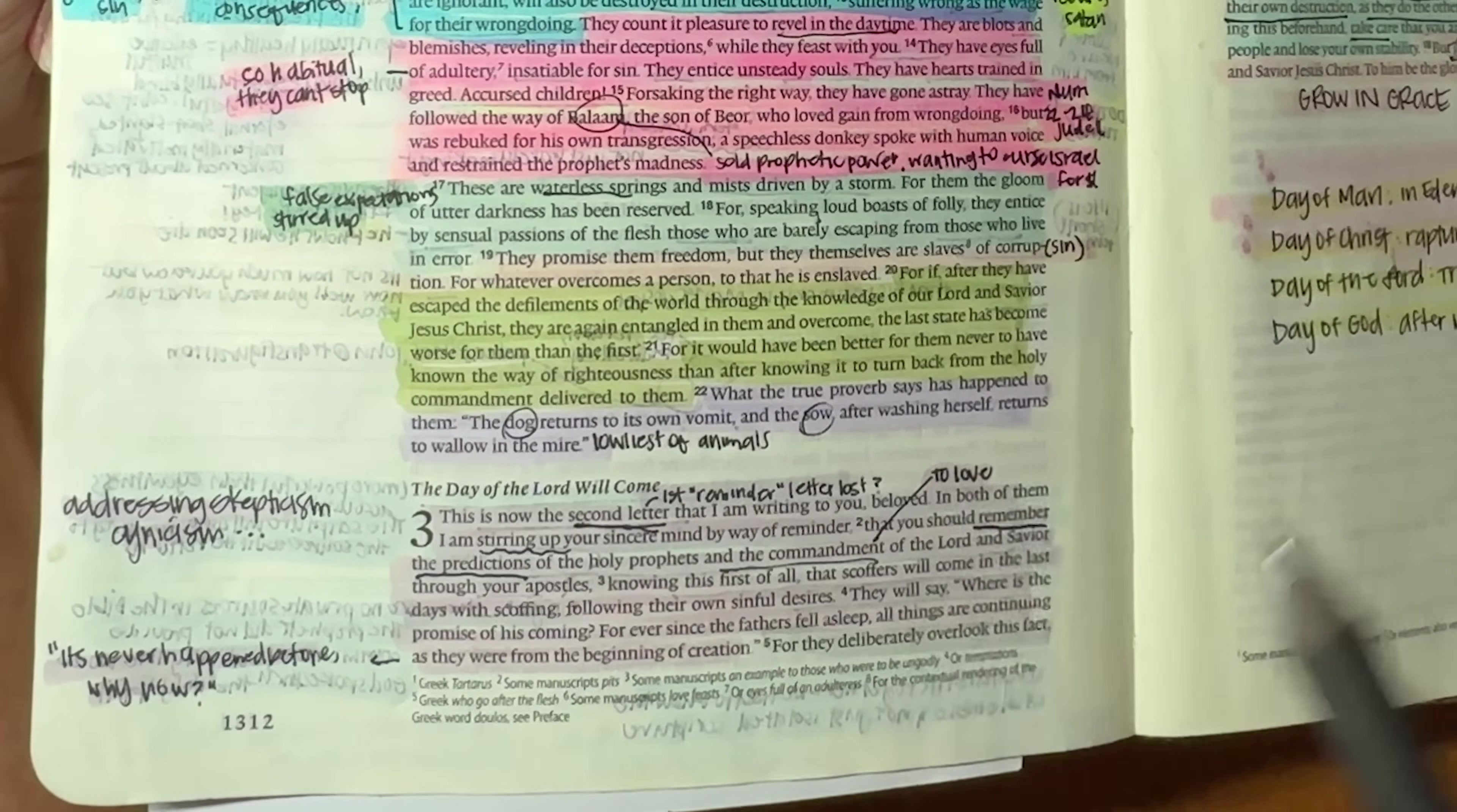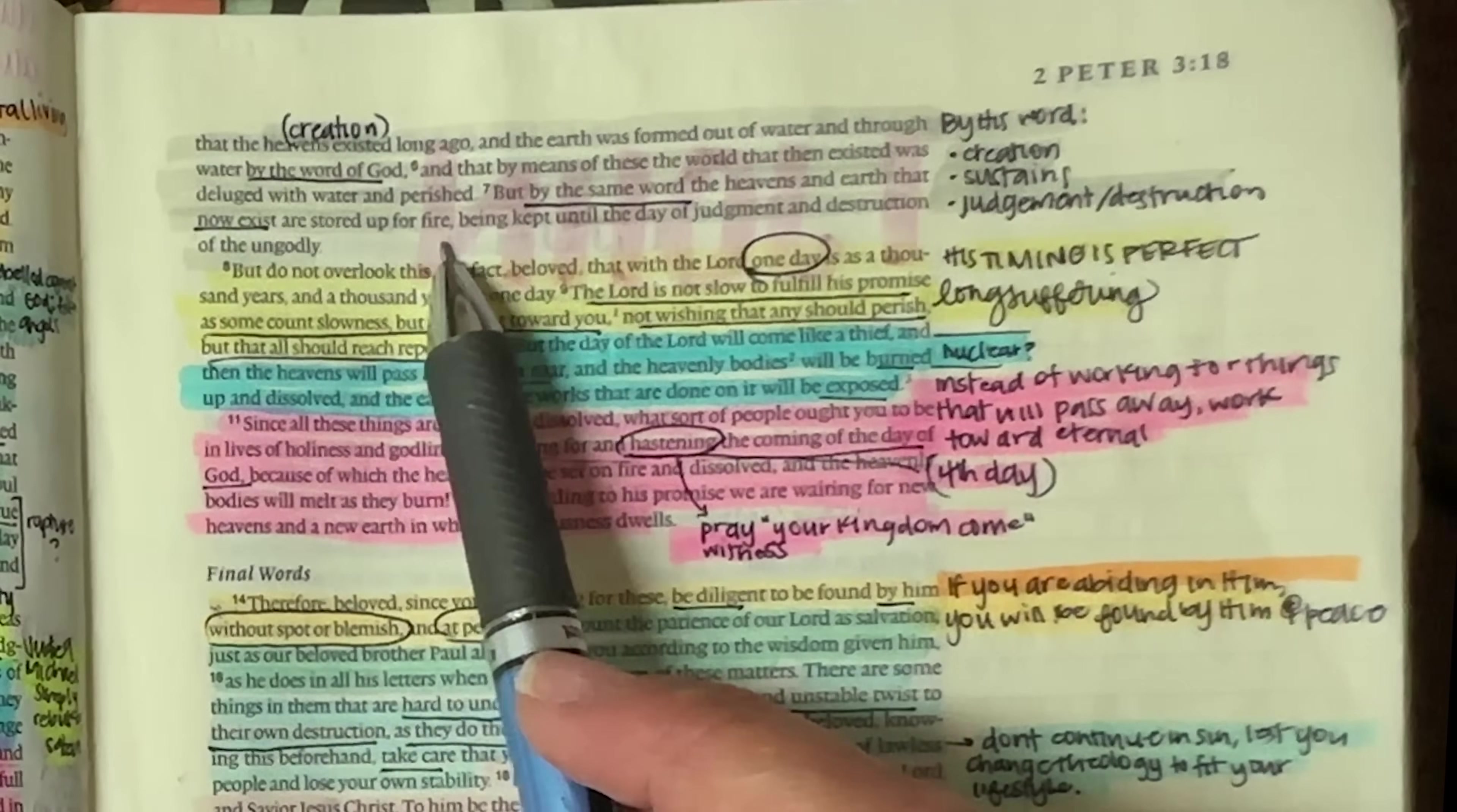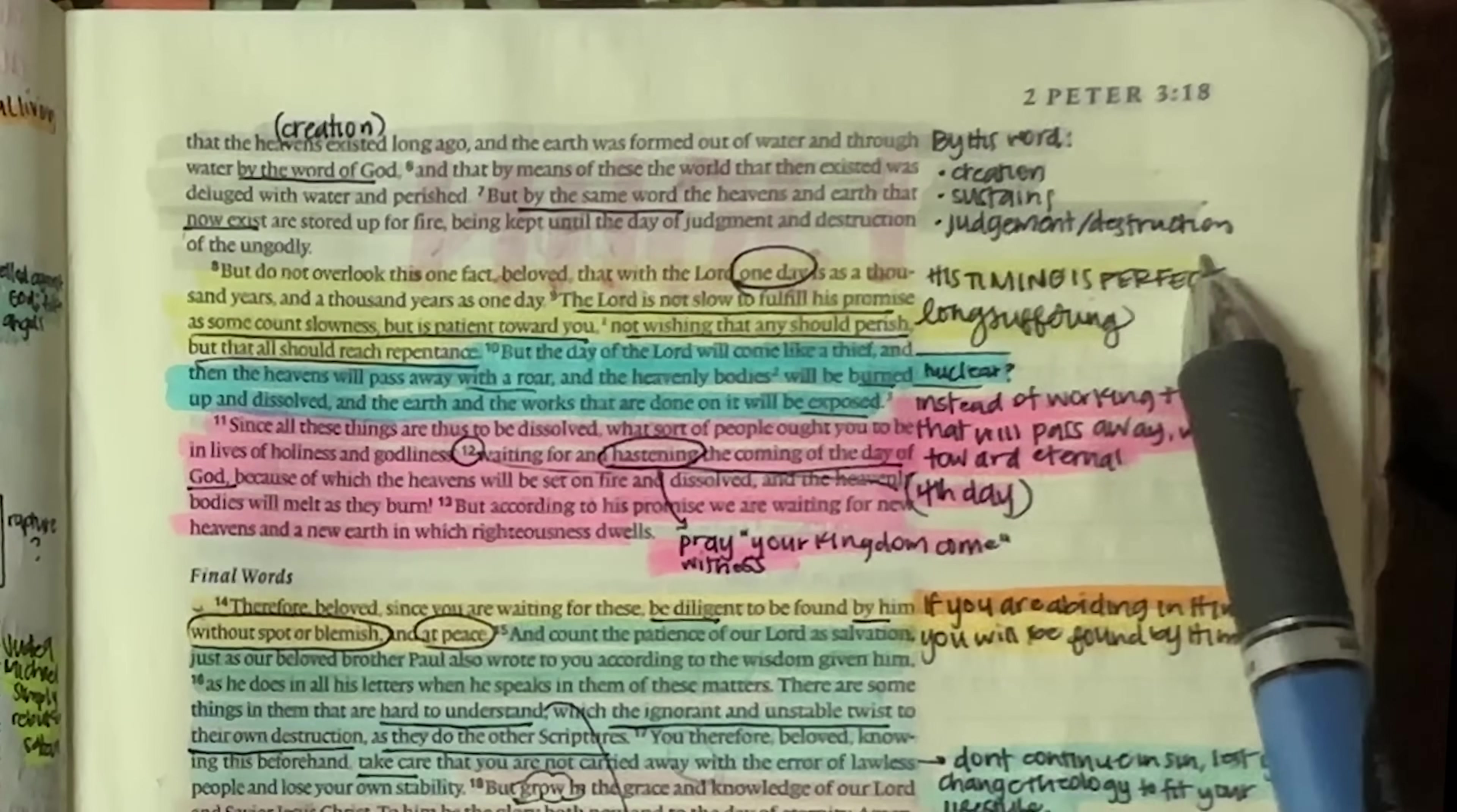For they deliberately overlook this fact that the heavens existed long ago and the earth was formed out of water and through water by the word of God. So hello, they forgot that God is our creator and that by means of these, the world that then existed was deluged by with water and perished. But by the same word, the heavens and earth that now exist are stored up for fire being kept until the day of judgment and destruction of the ungodly. So they're forgetting that our creator who destroyed the earth by the flood is going to do it once again, but this time by fire. And they're not even looking to that. And notice that it is all by his word that there was creation. There was the sustaining of the world, but also judgment and destruction that will take place by his word.